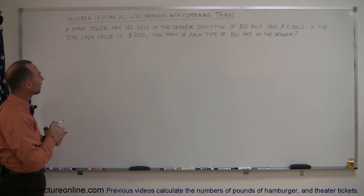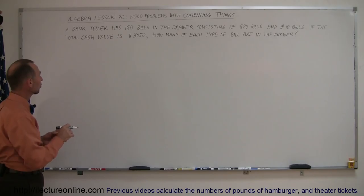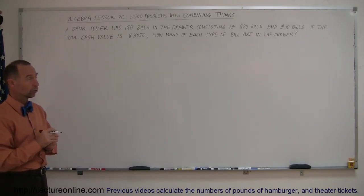Let's read the problem. It says a bank teller has 180 bills in the drawer consisting of $20 bills and $10 bills. If the total cash value is $3,050, how many of each type of bill are in the drawer?